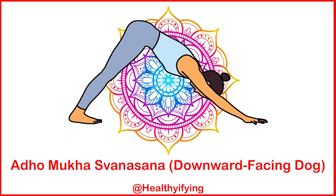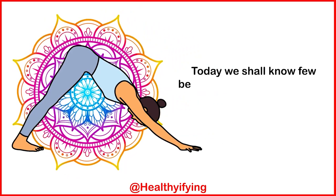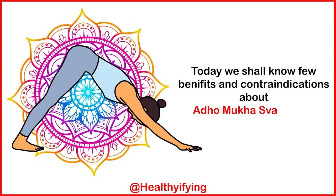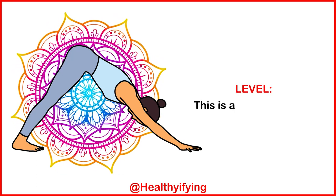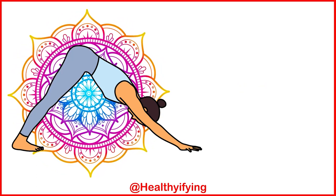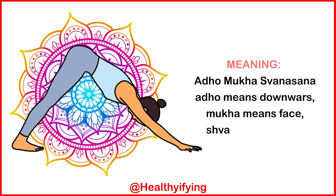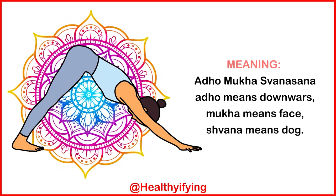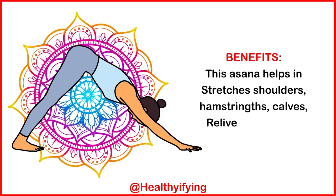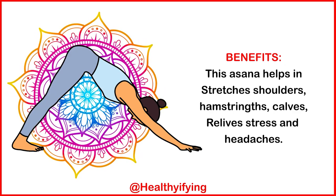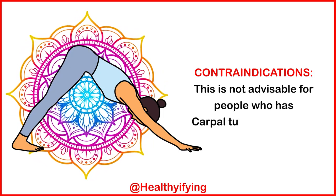Adho Mukha Svanasana – Downward Facing Dog. Today we shall know a few benefits and contraindications about Adho Mukha Svanasana, Downward Facing Dog. This is a beginner level pose. 'Adho' means downwards, 'Mukha' means face, 'Shvana' means dog. Benefits: this asana helps in stretching shoulders, hamstrings, and calves, and relieves stress and headaches. Contraindications: not advisable for people who have carpal tunnel syndrome.